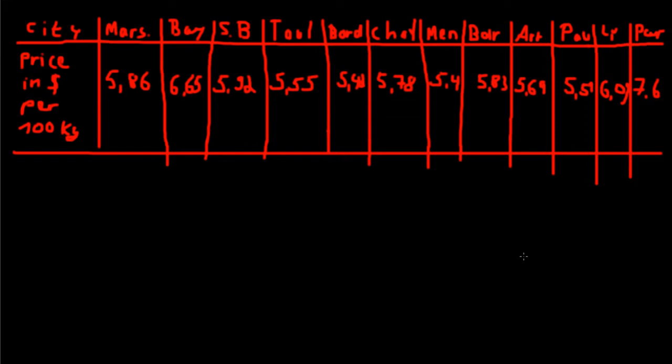You might have sufficient data for the cities of Marseille, Bayeux, Saint-Brieuc, Toulouse, Bordeaux, Chateauroux, Mende, Barledou, Arras, Pau, Lyon, and Paris. This is real data. So we have the cities and we have the price for 100 kg of wheat in dollars.